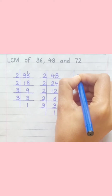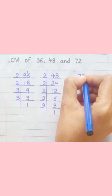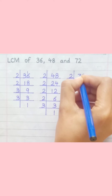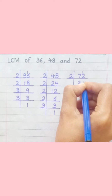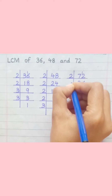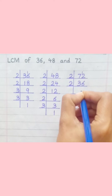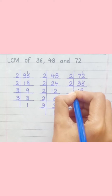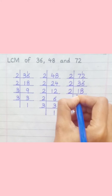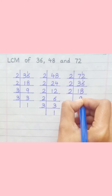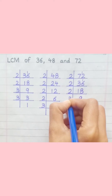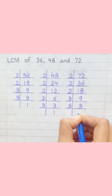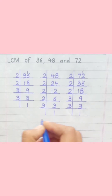72: 2 3s are 6, 2 6s are 12, 2 1s are 2, 2 8s are 16, 2 9s are 18, 3 3s are 9, 3 1s are 3.